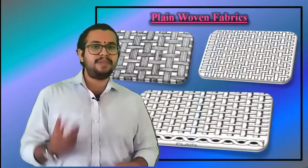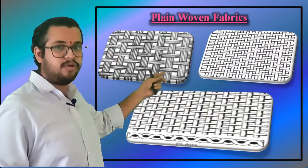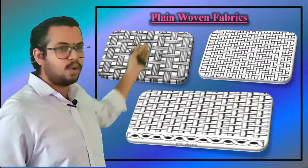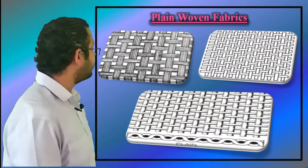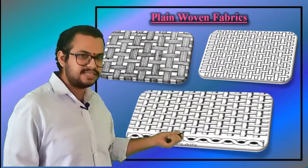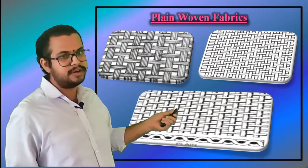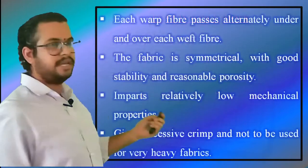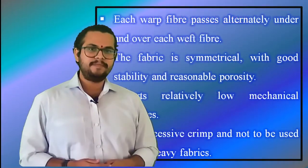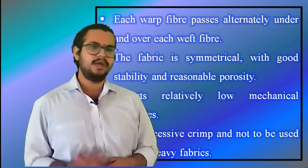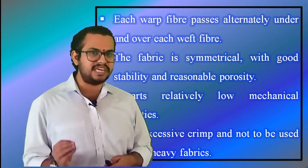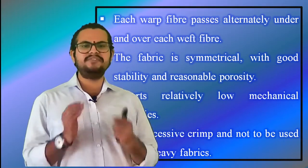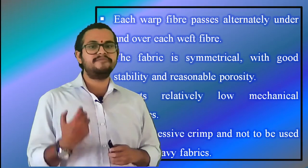Plain woven fabric. Each warp fiber passes alternately under and over each weft fiber. The fabric is symmetrical with good stability and reasonable porosity. However, it is the most difficult of the weaves to drape, and the high level of fiber crimp imparts relatively low mechanical properties compared with other weave styles.